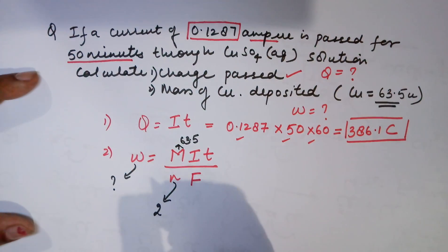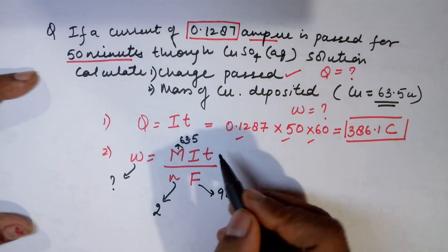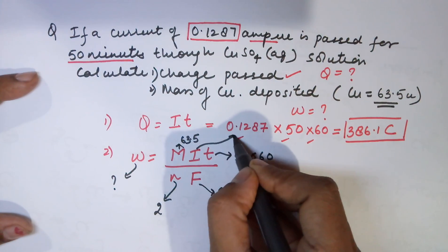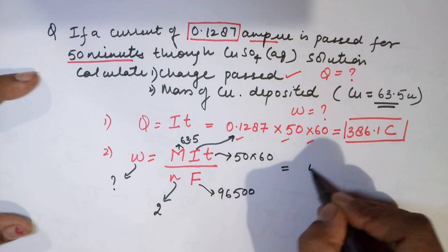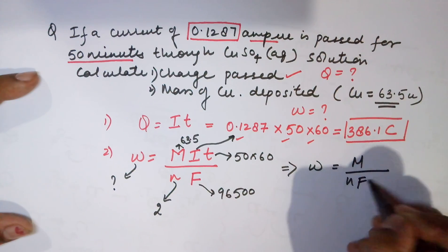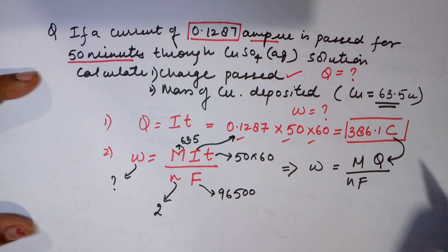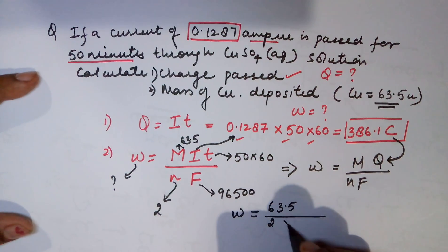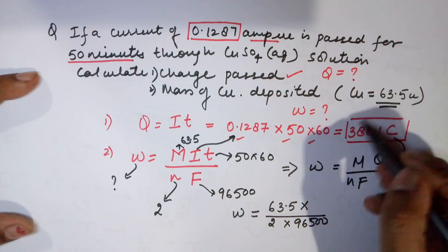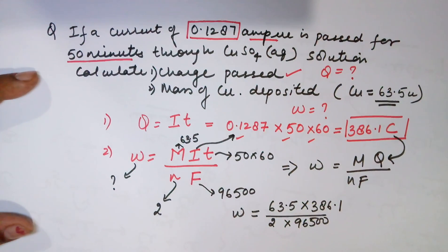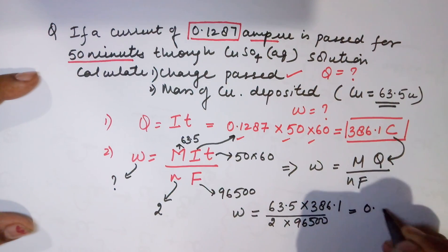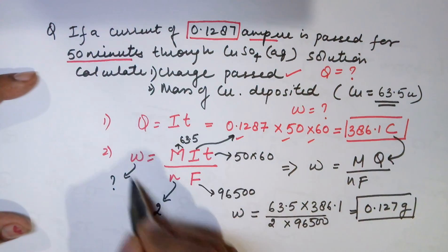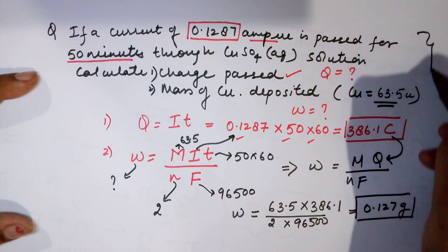N is the valency, which is +2, that equals 2. Faraday is 96500 coulombs. Time is given as 50 minutes which we converted into seconds. I equals 0.1287. The same thing can also be written as W = M/(N×F) × Q. And Q you have calculated already. Your weight deposited can be: atomic mass 63.5 ÷ (2 × 96500) × 386.1. You get your weight deposited which comes out to be 0.127 grams.